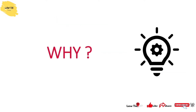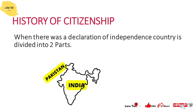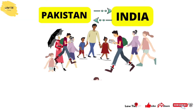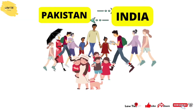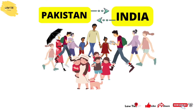Now, why do we need to add these provisions? When independence came, the country was divided into two parts — India and Pakistan. People were given the freedom to choose their nationality and join the country they wanted. People came from Pakistan to India and vice versa, so a strict provision was needed.